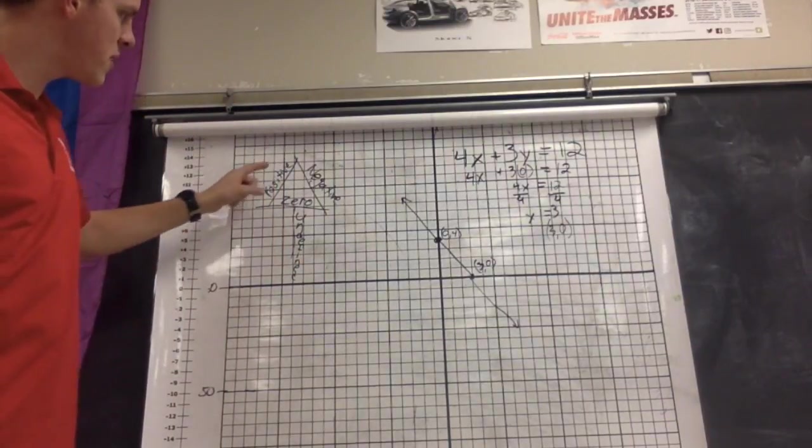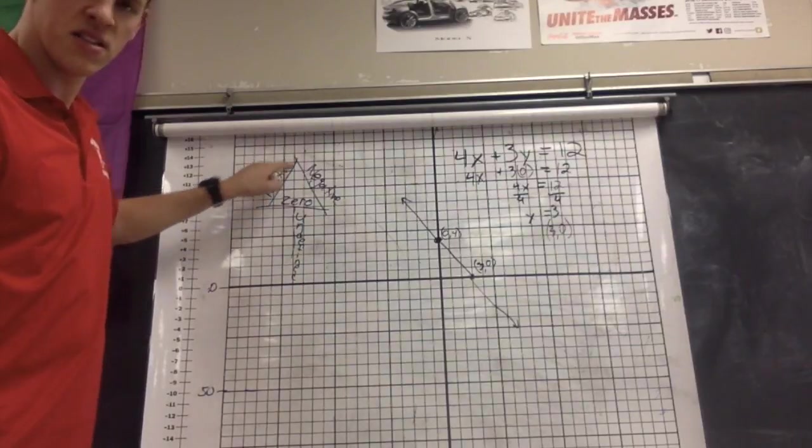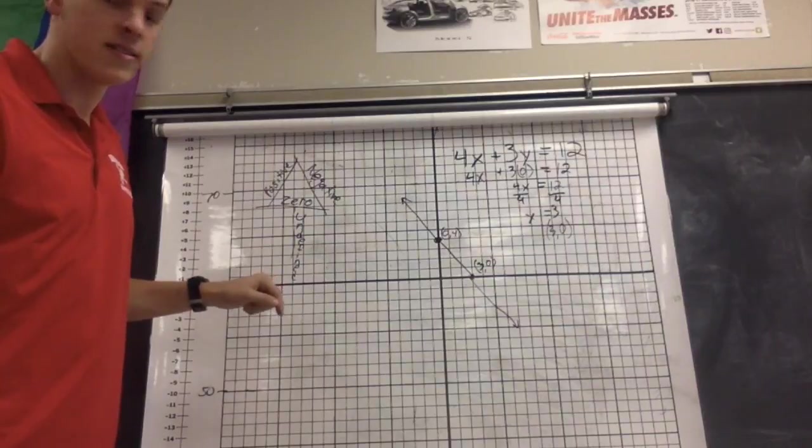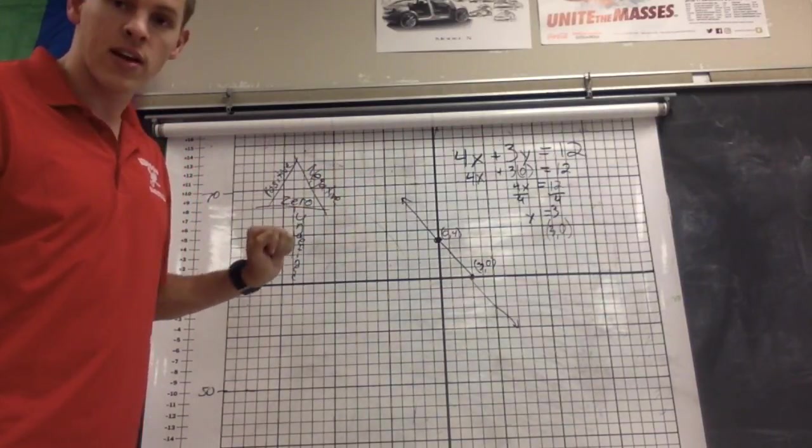All right, so this gives them an idea. So the question is, does this line look like positive? No. Does this line look like negative? Yes. So we have a negative slope for sure.